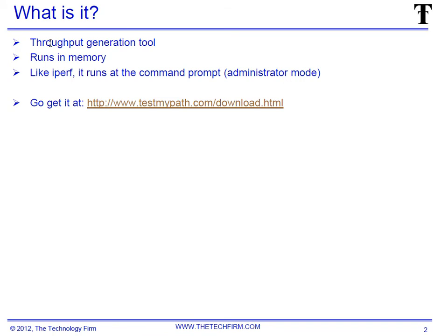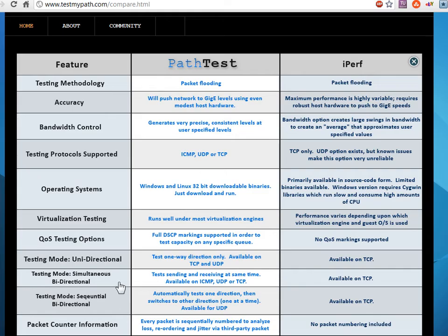So what is it? PathTest is a throughput generation tool much like iPerf — it just runs in memory. You can go to testmypath.com and I've got that web page up right here. What they've done is put up a little comparison between PathTest and iPerf. I'm going to point out a few things that I like.